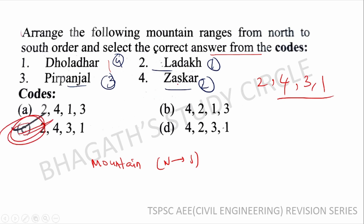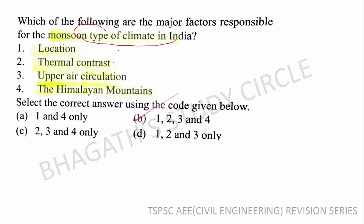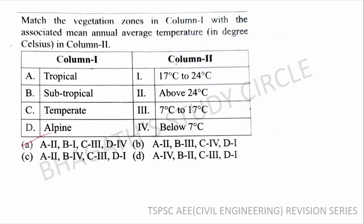Next question: Which one of the following are the major factors responsible for the monsoon type of climate in India? The factors include thermal contrast and temperature differences between air masses, upper air circulation, and the Himalayan barrier. Option B is the correct answer.